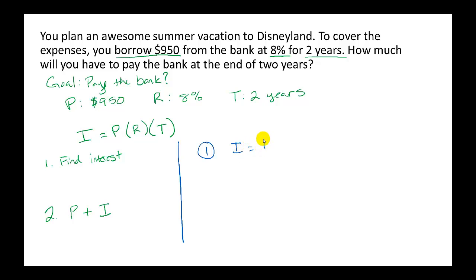I equals principal times rate times time. We need to find our interest. It is $950 times rate of 8% times time of 2 years.